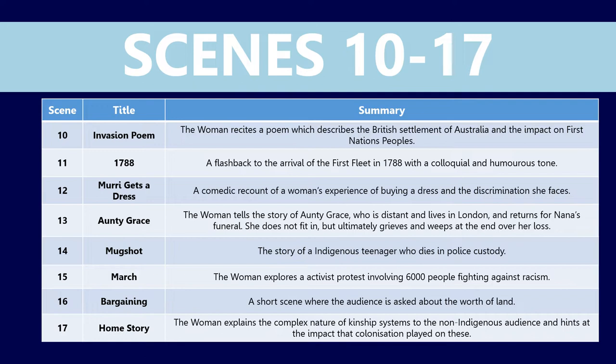Scene 14 is the story of an Indigenous teenager who dies in police custody — a really horrific scene. Scene 15, March, explores an activist protest involving about 6,000 people speaking out against racism. Scene 16, Bargaining, is very short — literally one line of dialogue where the audience is asked about the worth of land. We'll finish with Home Story, where the woman explains the complex nature of kinship systems, particularly to the non-Indigenous audience, and hints at the impact colonisation has played on these.